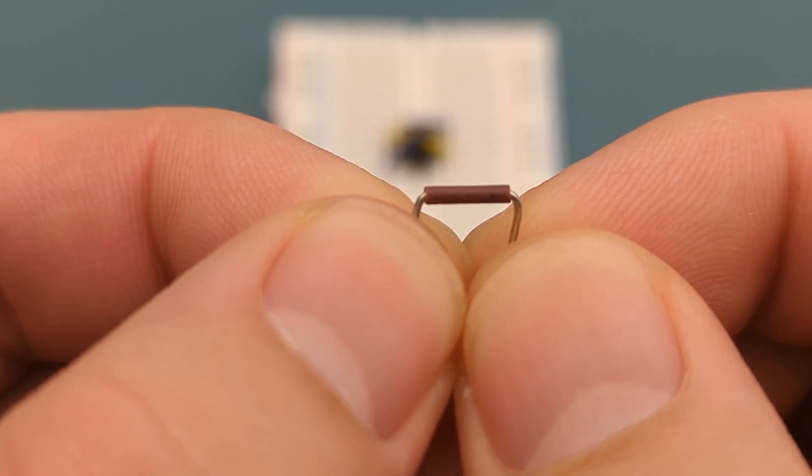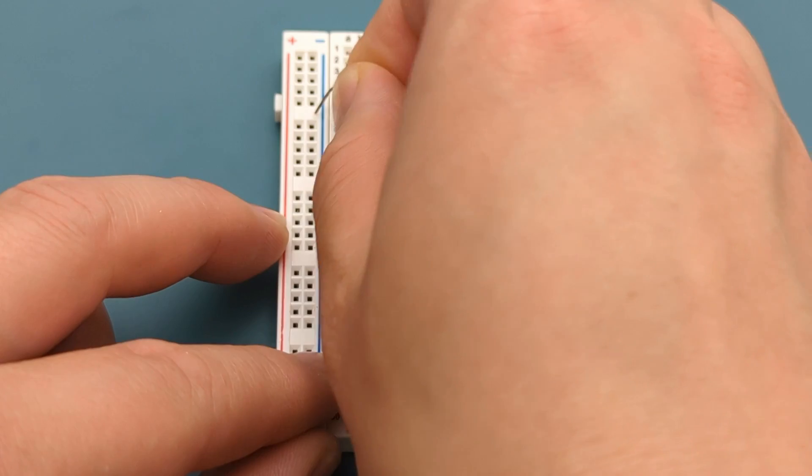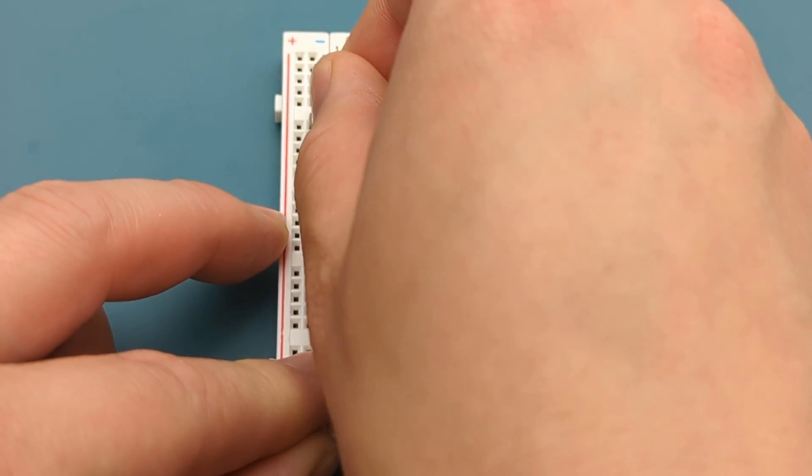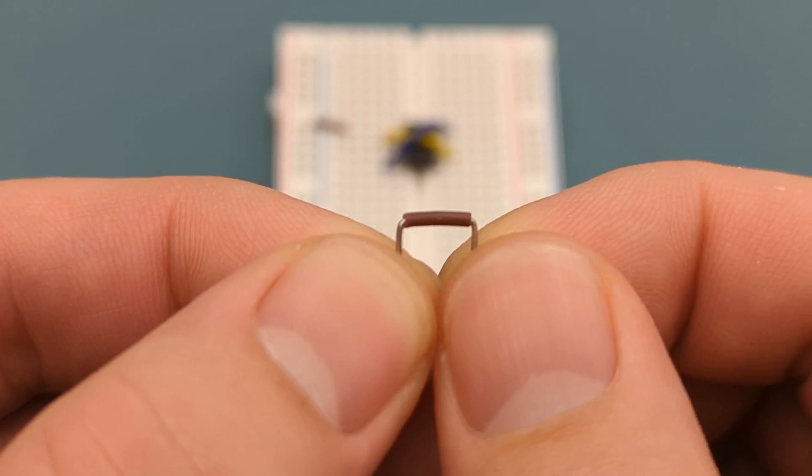A jumper wire connects pin 1 or ground to the negative rail. A jumper wire connects pin 8 or VCC to the positive rail.